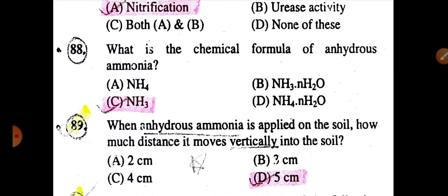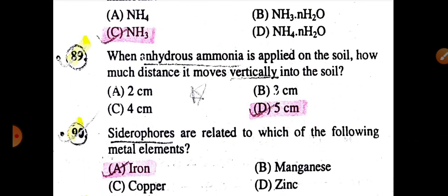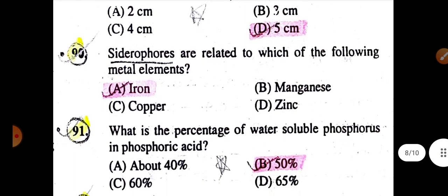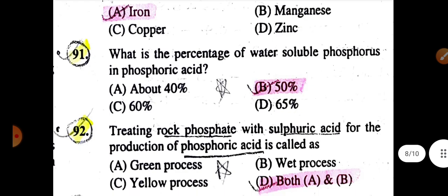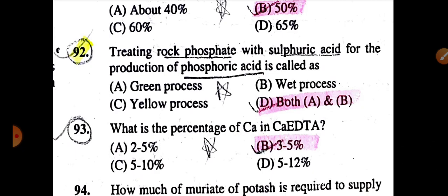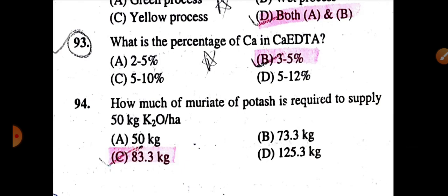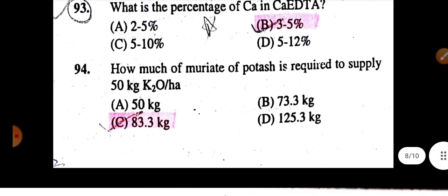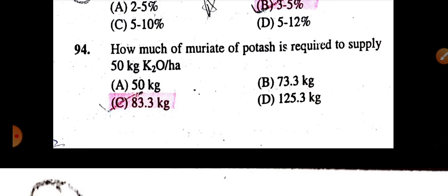CS2 is the potential inhibitor of nitrification. What is the chemical formula of anhydrous ammonia is NH3. When anhydrous ammonia is applied on soil, how much distance it moves vertically into soil is 5 cm. Siderophore are related to which of the following metal elements is iron. What is the percentage of water-soluble phosphorus in phosphoric acid is 50%. Treating rock phosphate with sulfuric acid for the production of phosphoric acid is called green or wet process.